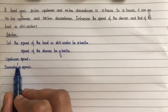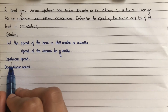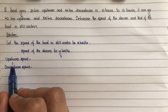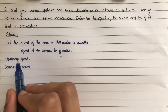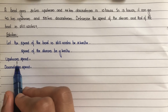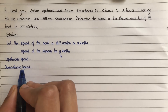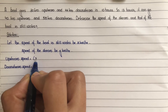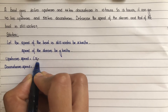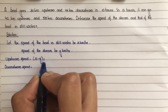Next, find the upstream speed and downstream speed. For upstream, the boat moves opposite to the stream's flow direction. So the upstream speed is x minus y — that is, speed of boat minus speed of stream.